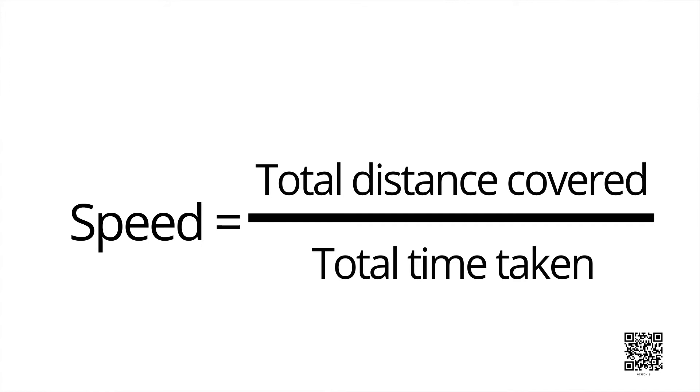So dear students, to measure speed, we need to study time and distance both. The formula is: speed is equal to total distance covered divided by total time taken. It means we can determine the speed of a given object when we measure the time taken by it to cover a certain distance.